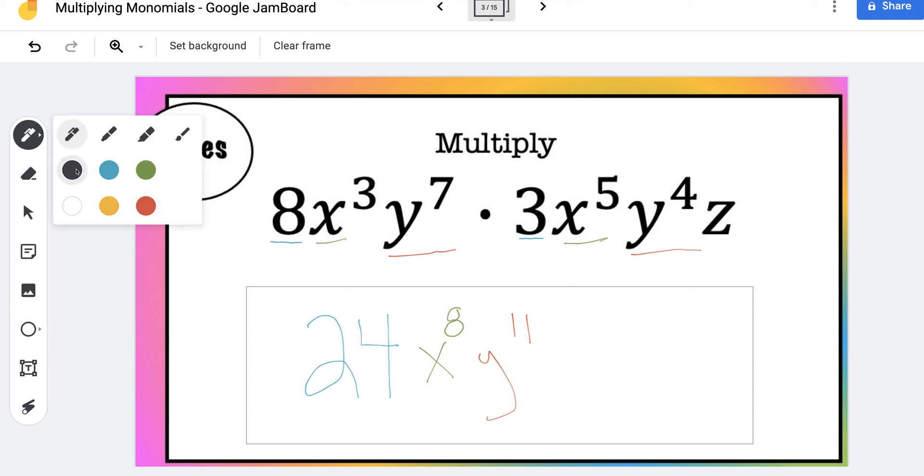And then finally, notice we just have a lone z over here. Well there's no z over here, right? So that's going to be the only part we're going to underline. It's going to be z. And then we'll add the z down here. So our final answer is 24x to the 8th y to the 11th z.